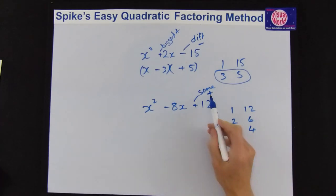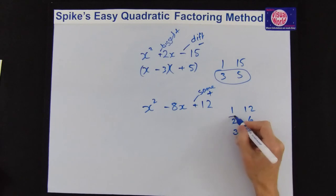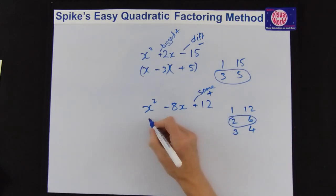So if you have a look, they've got to add to give you the 8 this time, so 12 and 1 is 13, doesn't work, but if you look at the second one, 2 plus 6 is 8, so that works. So your answers are 2 and 6,